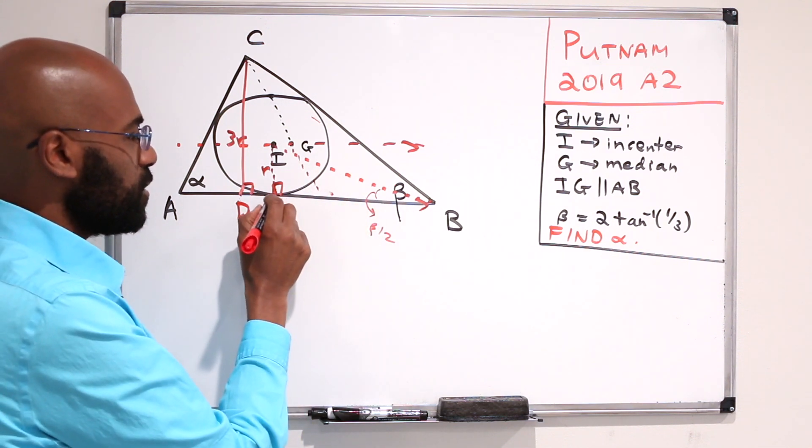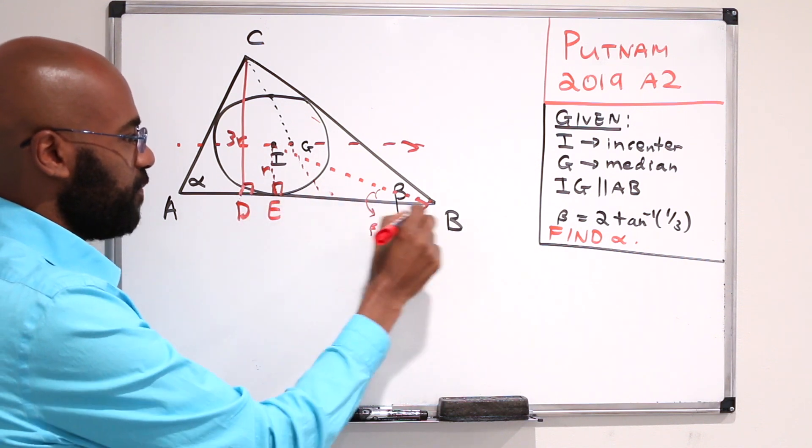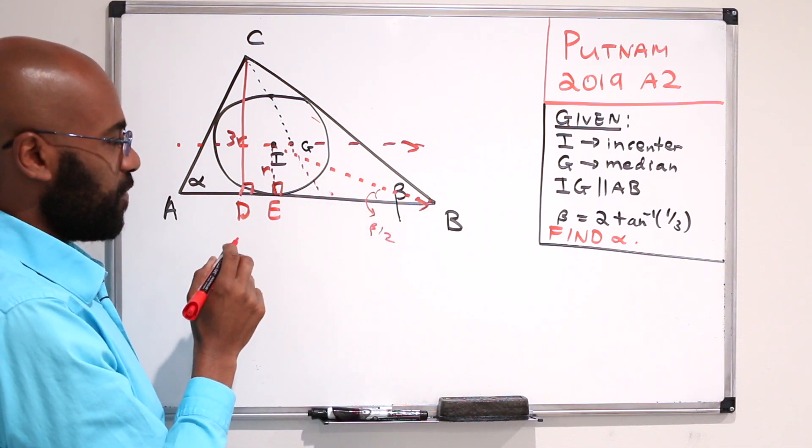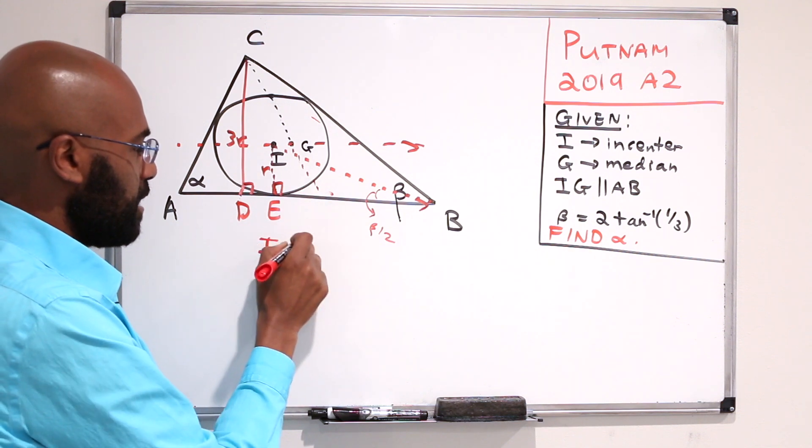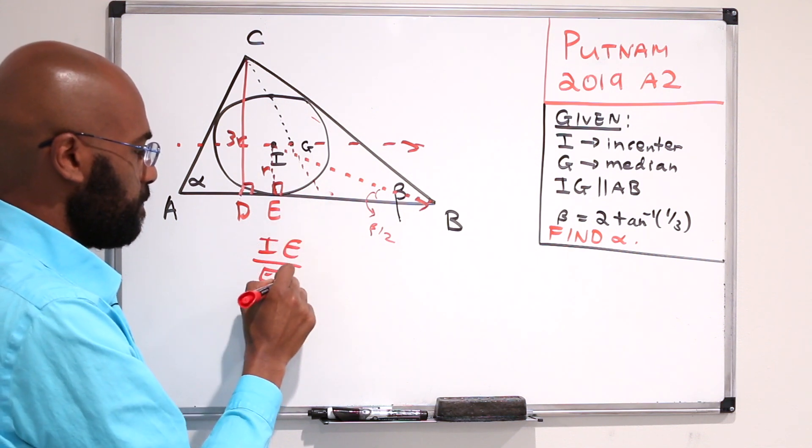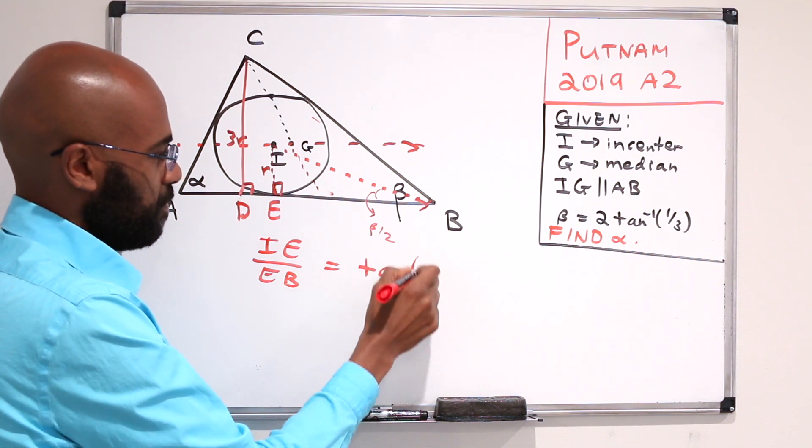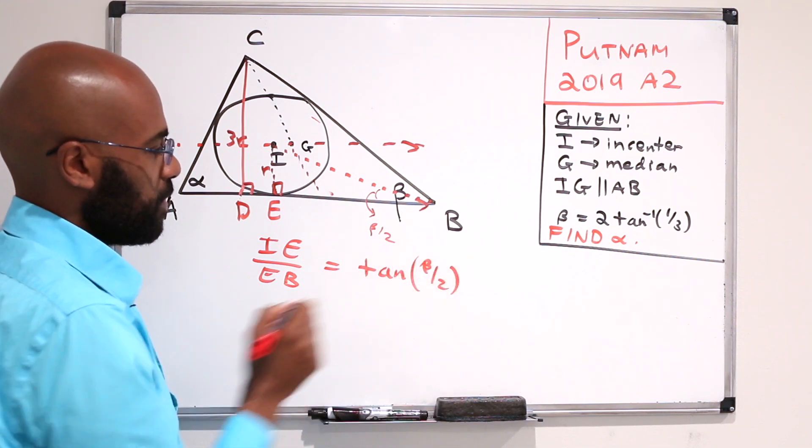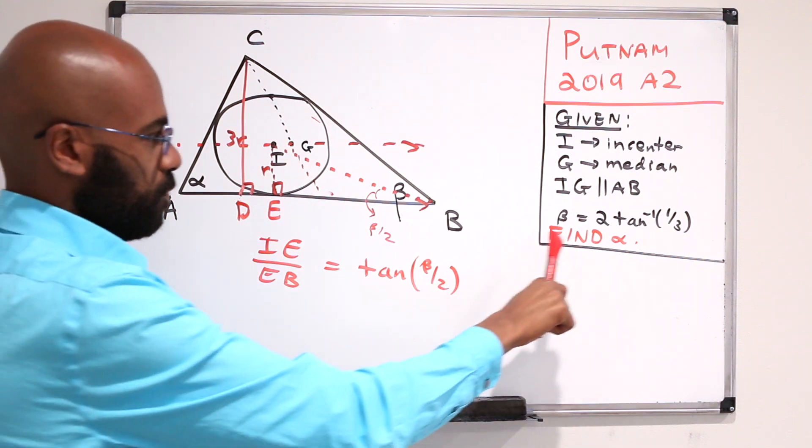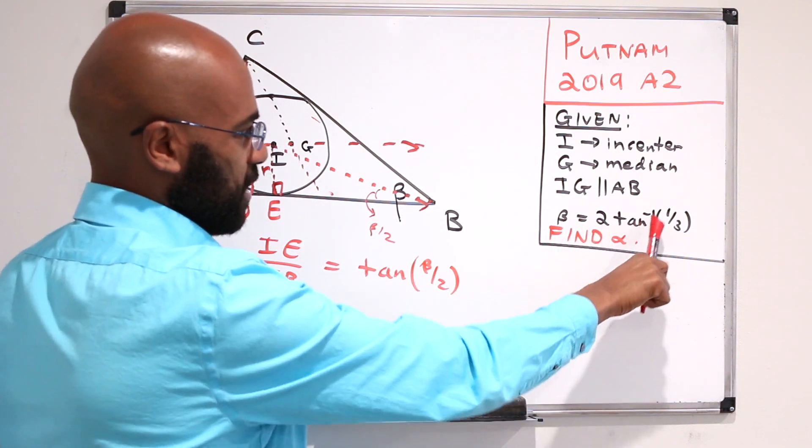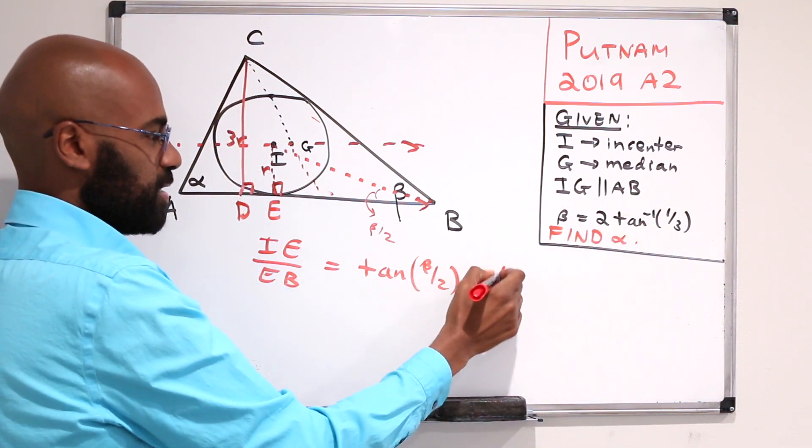So as a consequence, we can actually get some type of information about this length EB. In this case, EB over IE is the tangent of beta over 2. But we have that beta over 2 is the inverse tangent of a third, so this is actually a third.